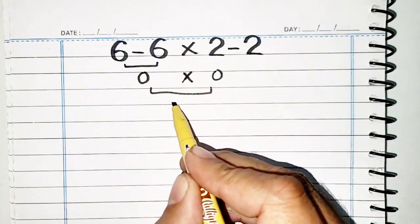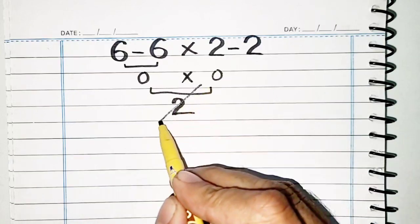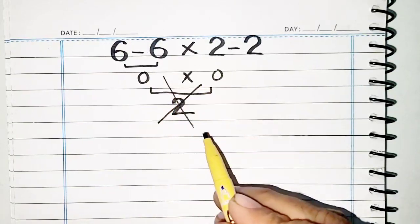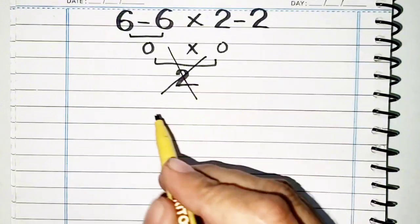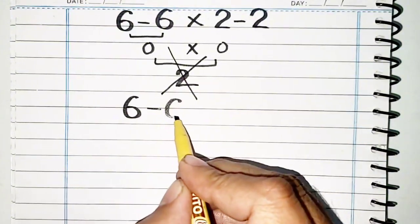0 times 0 will be equal to 0. But remember that 0 is not our correct answer, so we have to write the question again and solve it again.